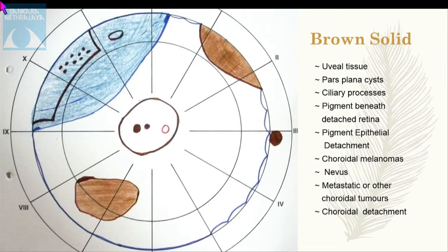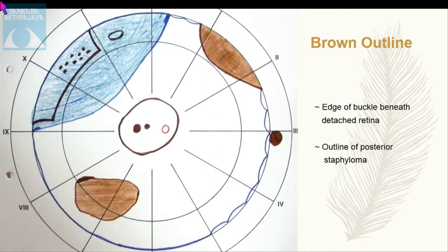Brown color is used to document uveal tissue, pars plana cysts, ciliary processes, pigment beneath detached retina, pigment epithelial detachment, choroidal melanomas, nevi, metastatic or choroidal tumors, and choroidal detachment. Brown outline is used to show the edge of buckle beneath detached retina and the outline of posterior staphyloma.